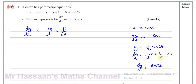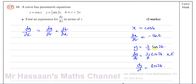One thing many people get confused about: why don't we differentiate the half? Well, it's part of the same term. It's like when you have 3x², you don't differentiate the 3 to get 0. You treat 3x² as a whole term. But if it were 3 plus x², then yes, you'd differentiate the 3 to 0 and get 2x, because they are separate terms.